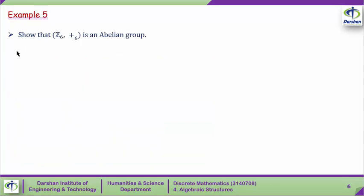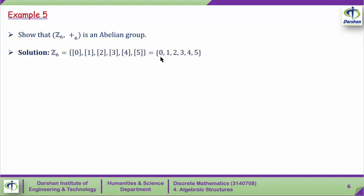Example 5: Show that Z6 with addition modulo 6 is an abelian group. Here the set is the set of integers modulo 6 and the binary operation is addition modulo 6. The solution: Z6 is {0, 1, 2, 3, 4, 5}, also written as the equivalence classes [0], [1], [2], [3], [4], [5]. We will show this structure is an abelian group by using a composition table.